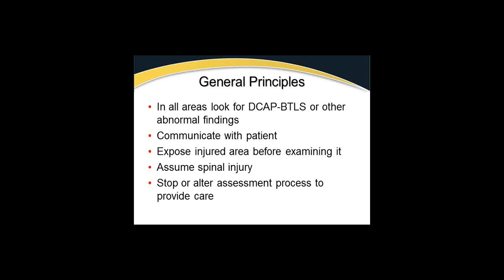Assume spinal injury - if you have a major mechanism of injury, in most cases there is probably a spinal injury involved and we treat as if there is. Stop or alter your assessment to provide care as you go. If we find a broken forearm on a patient ejected from a car crash with more significant problems, we're not going to do the full standard treatment for a broken arm - we might immobilize the patient on a long spine board with C-collar, pad the voids, and later come back to splint the forearm better. A long spine board really is a full body splint.